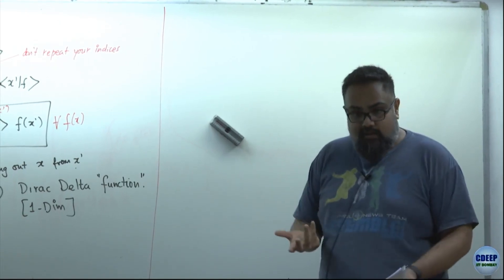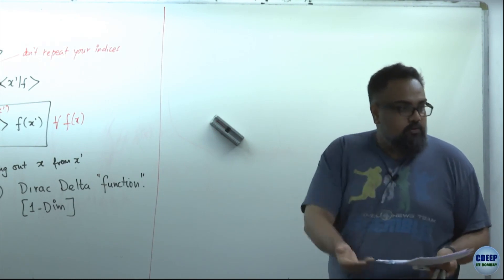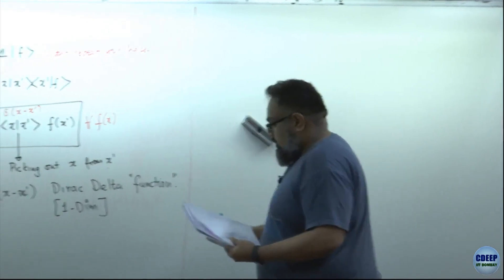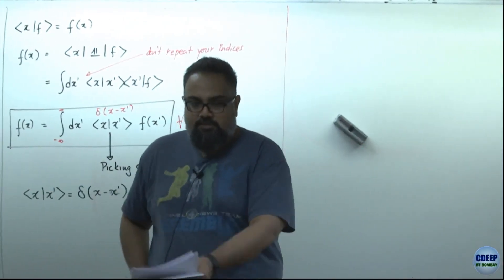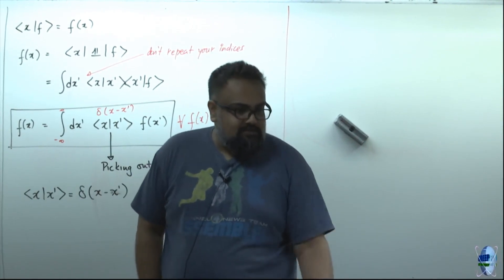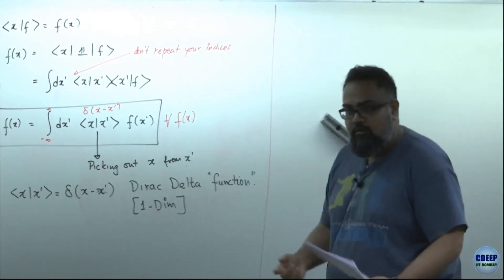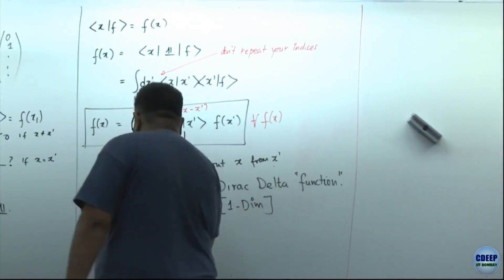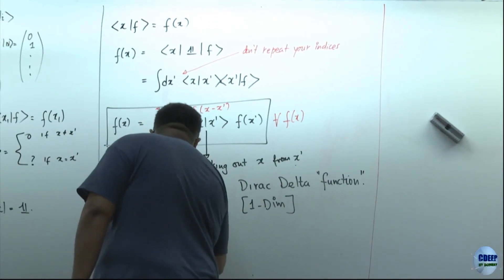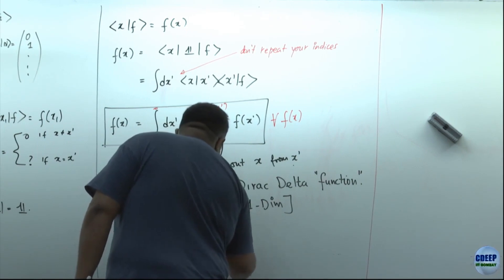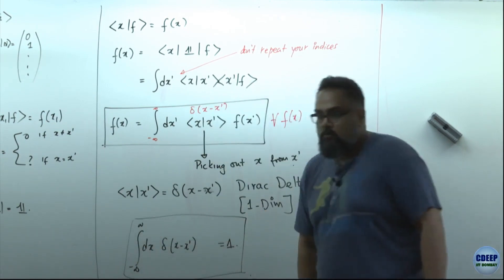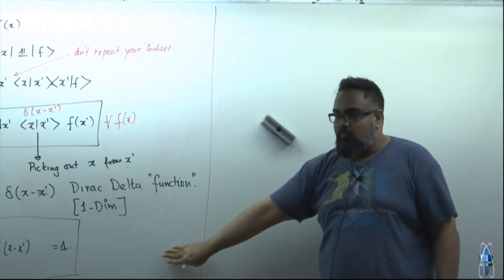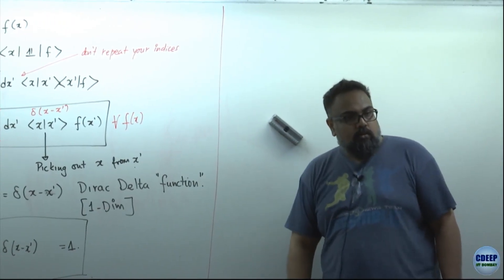What I want to do is write down all of the properties and representations of the delta function. Let's choose the simplest function: f(x) = 1. Then we get: integral from minus infinity to infinity of dx delta(x-x') times 1 equals 1. That's the normalization of the delta function. So we want f(x) to equal the integral from minus infinity to infinity of dx' delta(x-x') f(x') for all functions f(x).